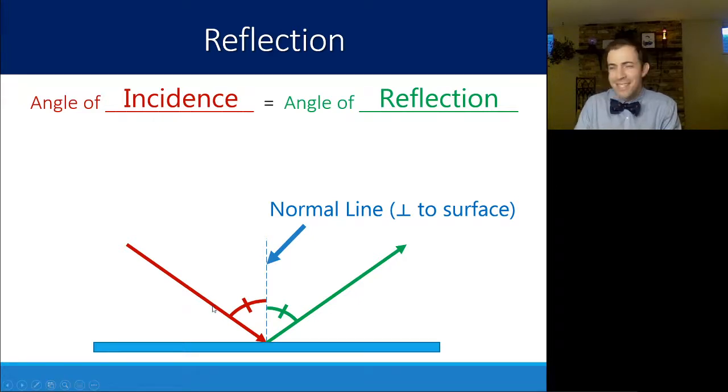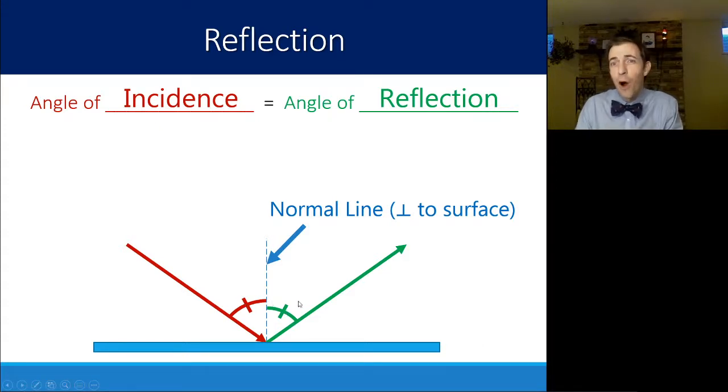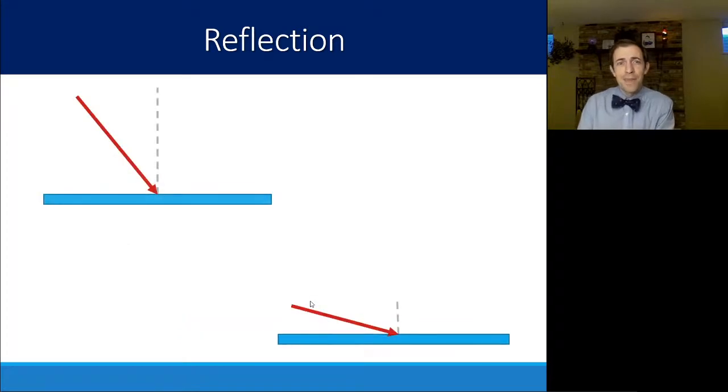So it's tempting to take the angle relative to the surface itself, but that's not how we are going to be defining that for reflection and then for refraction. And I'm using hash marks here to show that these angles are always equal to each other. And if you have a steeper angle of incidence, you'll have a steeper angle of reflection. And same thing for a shallower angle.